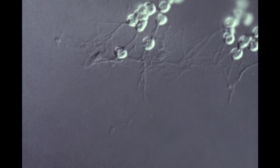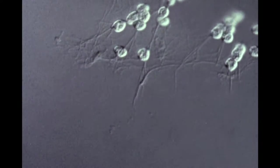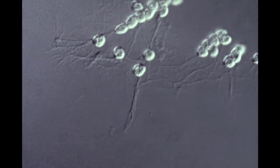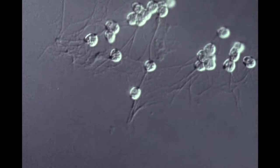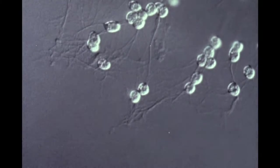The network within which the cells glide is produced by the cells themselves and is laid down ahead of them as thin filaments which coalesce into larger strands.